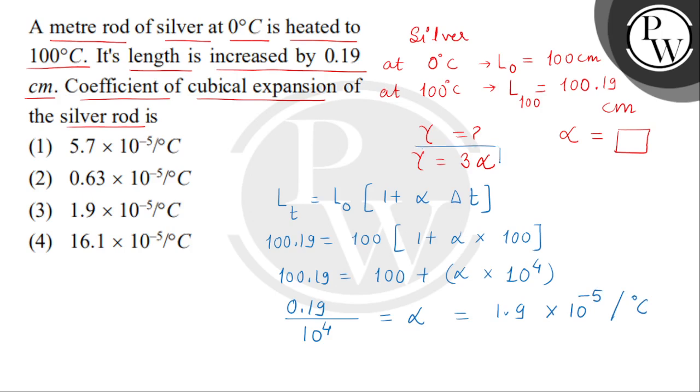Children, now we will put the value of alpha. So we get gamma equals to 5.7 multiplied by 10 to the power minus 5 per degree Celsius. Hence correct answer is option number 1. Thank you.